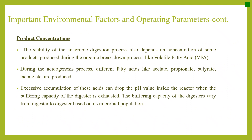Product concentration. The stability of the anaerobic digestion process also depends on the concentration of products produced during organic breakdown, particularly volatile fatty acids. During acidogenesis, different fatty acids like acetate, propionate, butyrate, and lactate are produced. Excessive accumulation of these acids can drop the pH value inside the reactor when the buffering capacity of the digester is exhausted. The buffering capacity varies from digester to digester based on its microbial population. With this, we close this anaerobic digestion segment and move on to the next one.